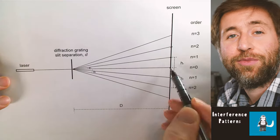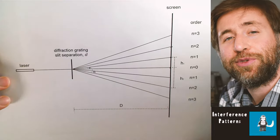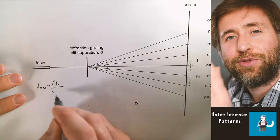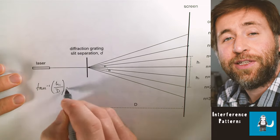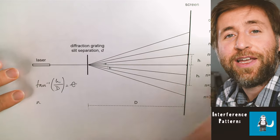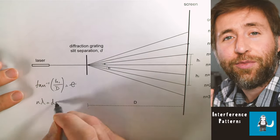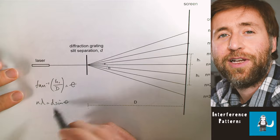You use trigonometry to work out the angles between the zeroth order maximum and the subsequent maxima, then use the equation n lambda equals d sin theta to work out the wavelength of the laser light. Visible light — and laser light — is in the order of hundreds of nanometres.